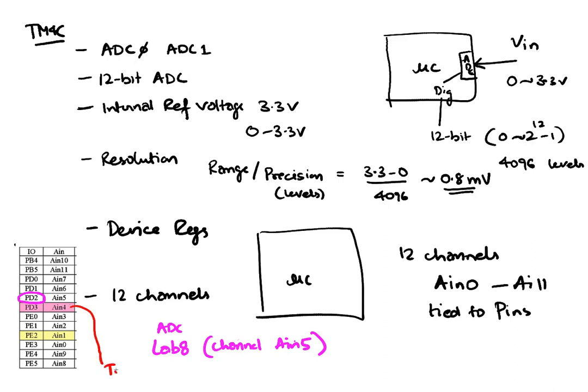We have been using channel 4 which is PD3 all along — this is what Texas Instruments was using. There are several examples in the book that use PE2. You might want to use PE2 if you want to keep all your inputs on one port — eventually in lab 10 you'll put buttons on PE0 and PE1 and analog input on PE2. A lot of examples in the book use these pins.